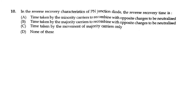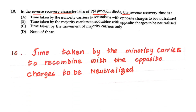In the reverse recovery characteristics of a PN junction diode, the reverse recovery time is the time taken by minority carriers to recombine with opposite charges to be neutralized. In reverse bias, only minority carriers are flowing, so the answer is: time taken by minority carriers to recombine with opposite charges to get neutralized. Thank you.